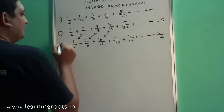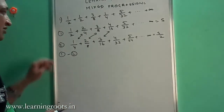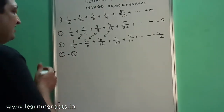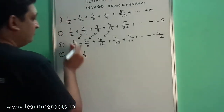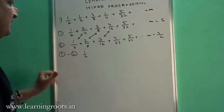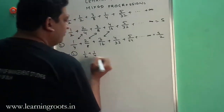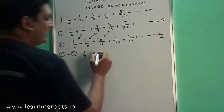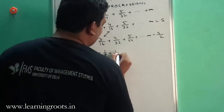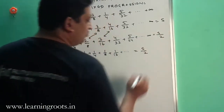So if this is equation 1 and this is equation 2, we simply subtract equation 2 from equation 1. The first term 1/2 will remain the same since there is no corresponding 1/2 term below. Then 2/4 minus 1/4 gives 1/4, 3/8 minus 2/8 gives 1/8, 4/16 minus 3/16 gives 1/16 and so on. And S minus S/2 is simply S/2.